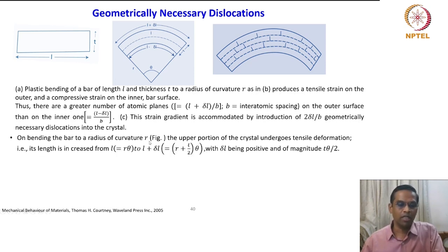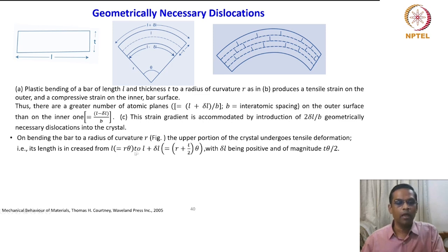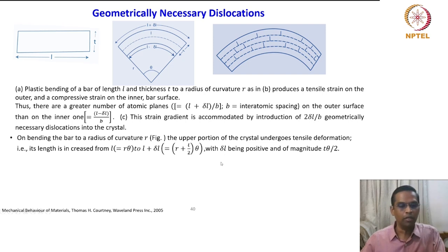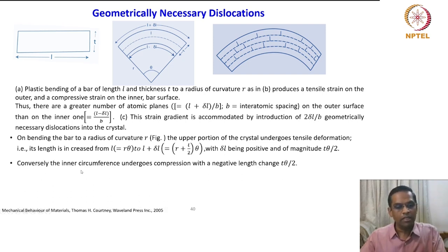On bending the bar to a radius of curvature r, the upper portion undergoes tensile deformation — its length increases from l (which equals r·theta) to l plus delta l (which equals (r + t/2)·theta). The delta l has magnitude t·theta/2. Conversely, the inner circumference undergoes compression with a negative length change of t·theta/2.